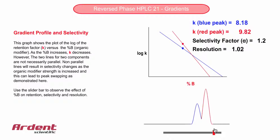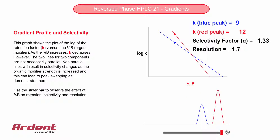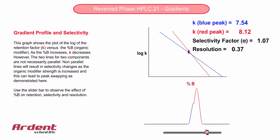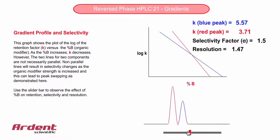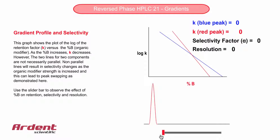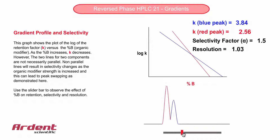This occurs because as the percentage of organic modifier in the mobile phase changes, the retention factor will also change for both components. But retention factors might not change at the same rate. This will lead to a change of selectivity and a change in resolution.